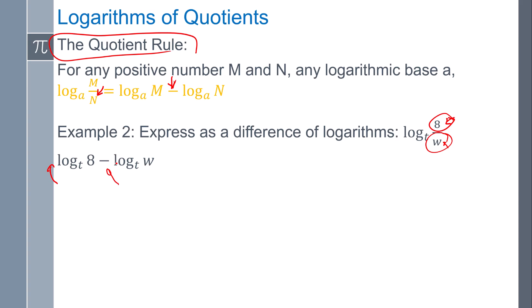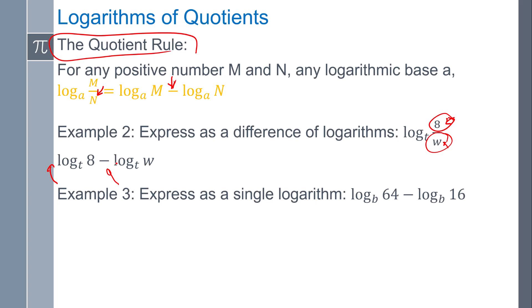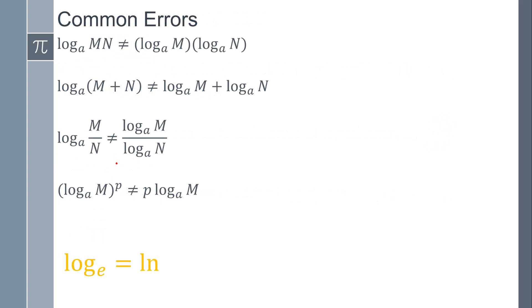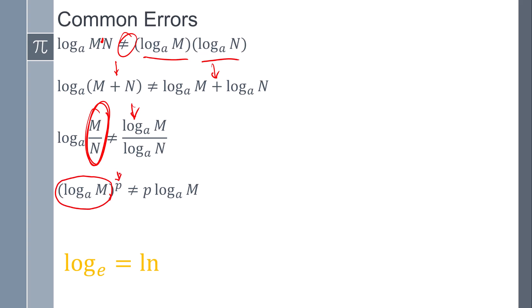A few common errors: multiplying inside a log doesn't mean you're multiplying two separate logs. Adding two things inside of a log doesn't mean you can break it apart with addition. Dividing inside a log does not mean you're dividing two separate logs. And if the entire log has an exponent, you cannot just move it to the front without the power rule. As a reminder, log base e is the same as ln.